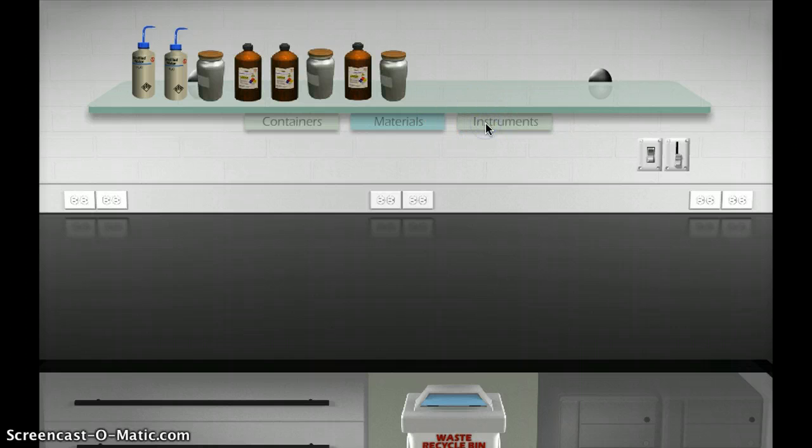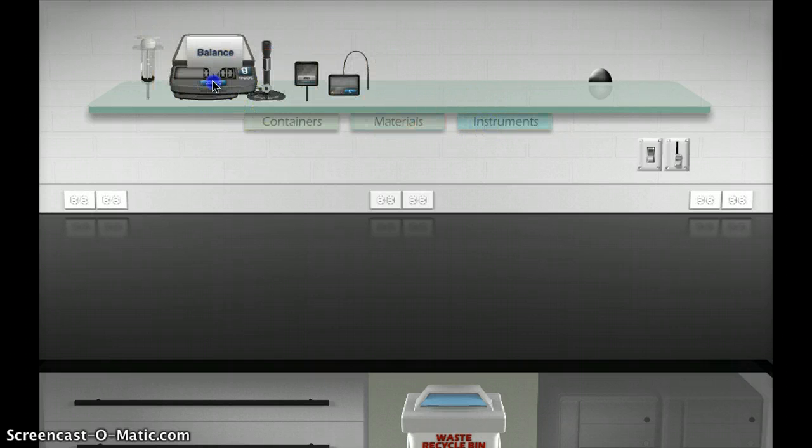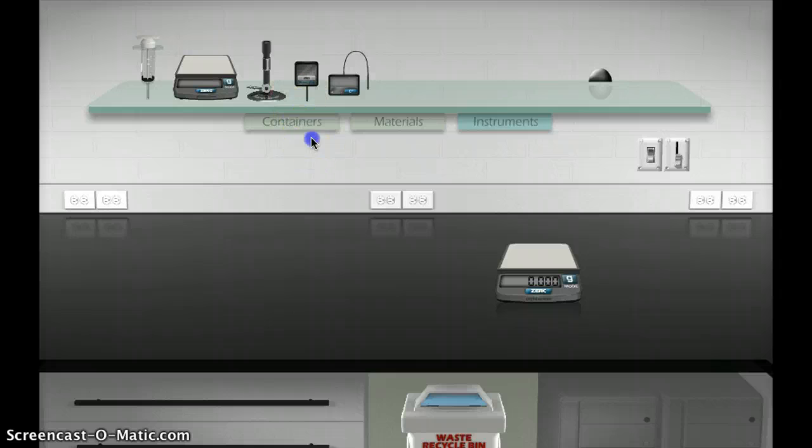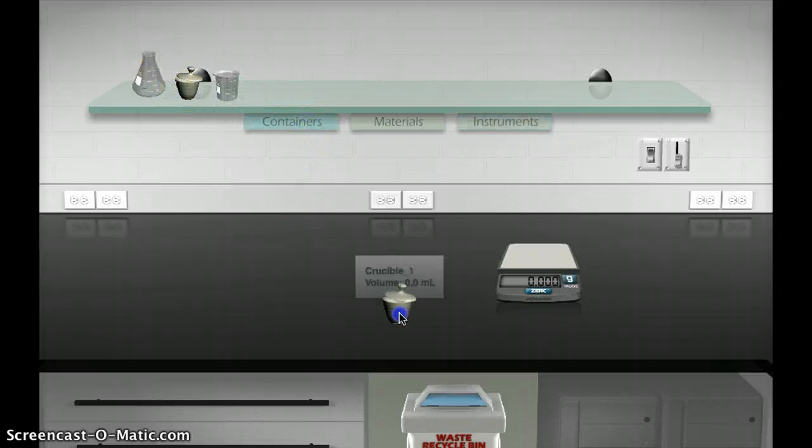First of all, we're going to take our balance and a crucible. We're going to put the crucible on the scale and measure that. That's going to be 88 grams.